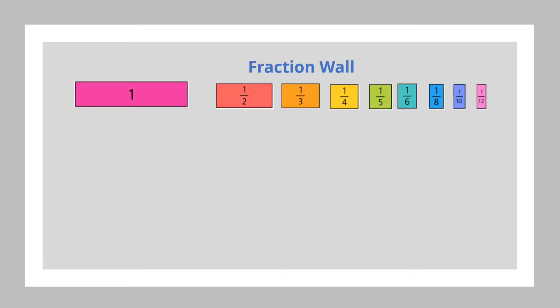We can use these tiles in the fraction wall to evaluate multiplication problems. Take, for example, if we had one-third times five, this means that I should take the one-third tile and take five of these one-third tiles and put them together like this.